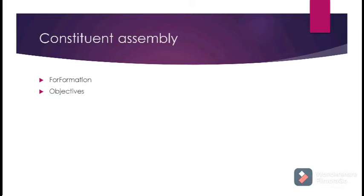The first factor is that the Constituent Assembly played a very vital role in bringing the Indian Constitution. The Constituent Assembly of India was constituted in November 1946 under the Cabinet Mission Plan. The total strength of the Constituent Assembly was supposed to be 389, of which 296 seats were allotted to British India. The Constituent Assembly held its first meeting on December 9, 1946, then its second session on December 11, 1946.